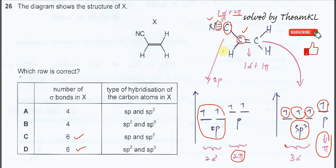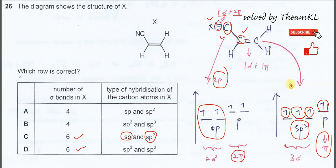So it's quite clear that inside X, the carbon hybridizations are sp and sp2. The nitrile carbon is sp, and the two double-bond carbons are sp2. Okay, that's all. Thank you.